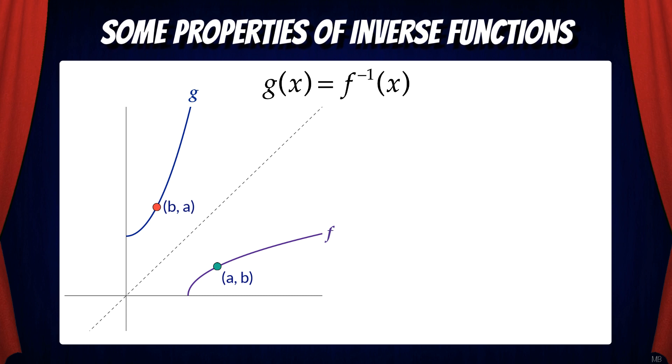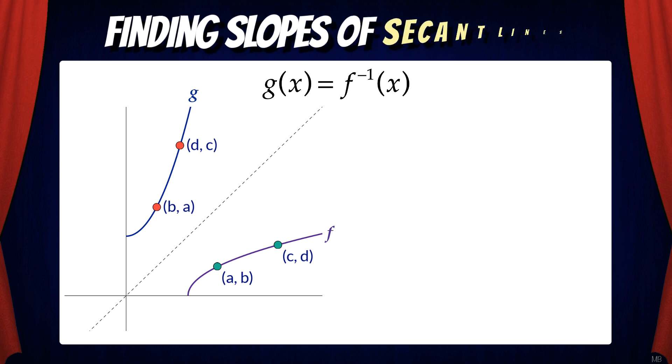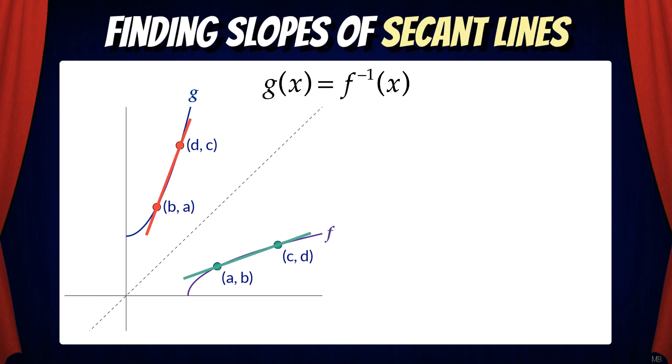I'm going to add two other points to my graphs here. The point cd on the f function, which would become the point dc on the g function. Now I'm going to find the slope of the secant lines through each of the points on f and g respectively.